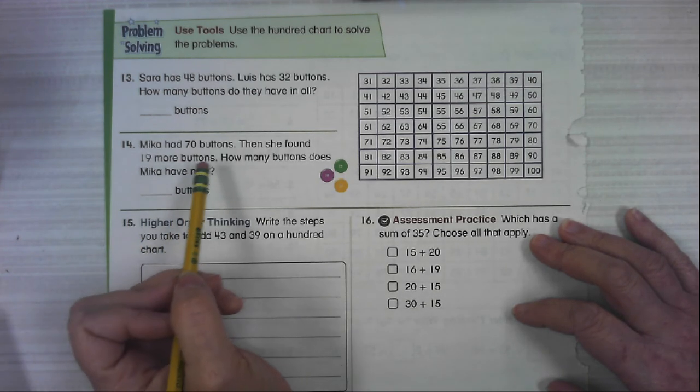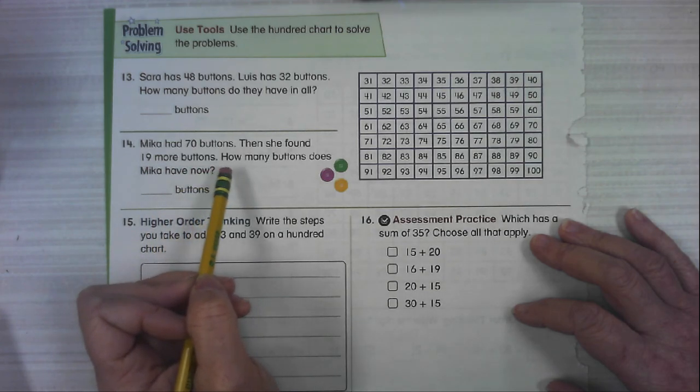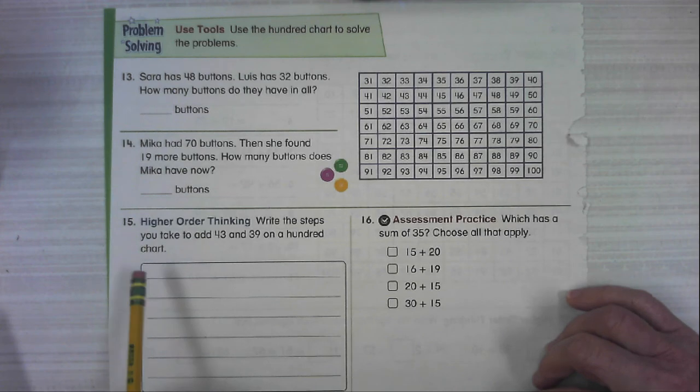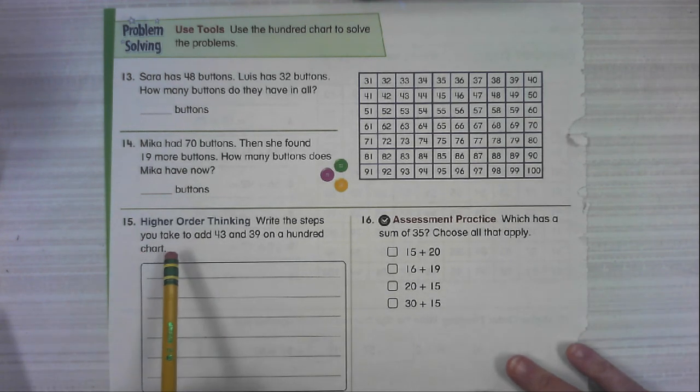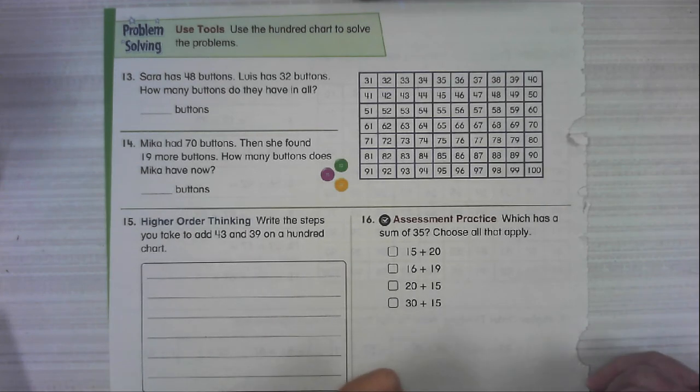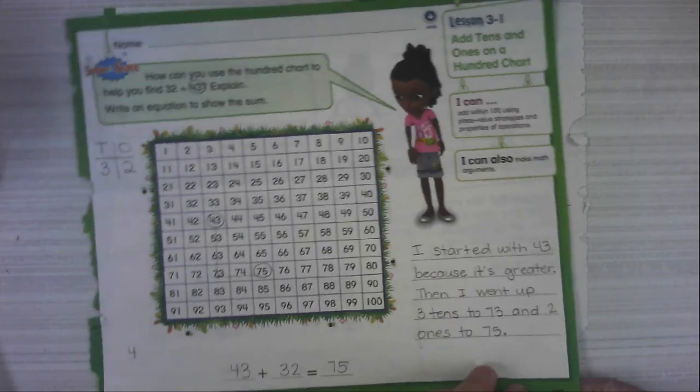Number 14, it says Micah had 70 buttons. Then she found 19 more buttons. How many buttons does Micah have now? Number 15, write the steps that you take to add 43 and 39 on a 100s chart. Now remember, that's very similar to what we had to do on the very front. We explained how we did it.